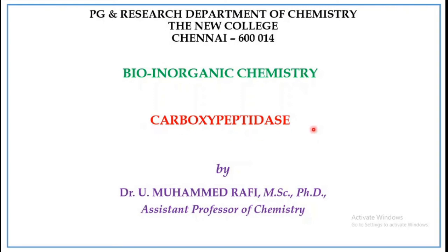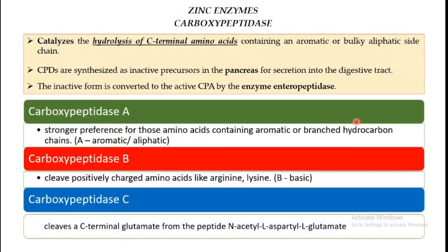Carboxypeptidase is a zinc enzyme used in the hydrolysis of C-terminal amino acids. It catalyzes hydrolysis to cleave proteins and peptides. These are synthesized in the pancreas, and the inactive form is converted to active form by the enzyme enteropeptidase.